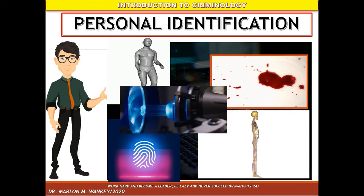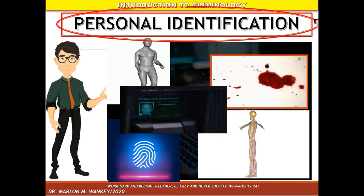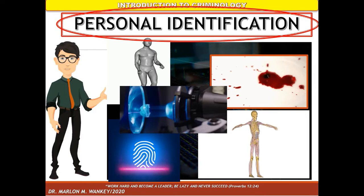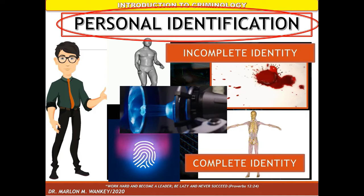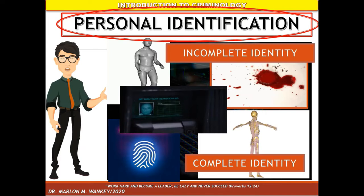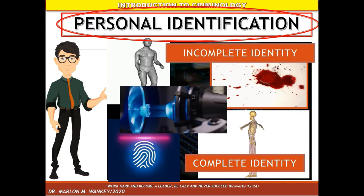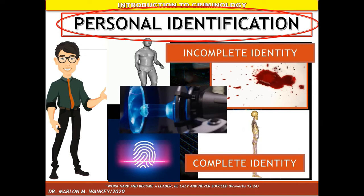Personal identification means establishment of individuality of a person. It could be either complete identity or incomplete identity. Complete identity includes the person's name as well as their address. Incomplete identity only includes the age, sex, and only partial information.